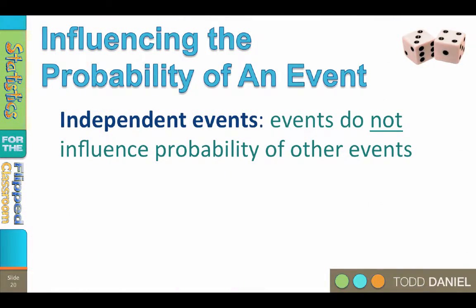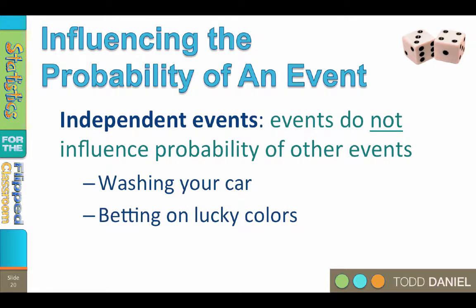The first factor that affects the probability of an event is whether the events are independent or dependent. Independent events are mutually exclusive events in which the occurrence of one event does not influence the probability of other events occurring. For instance, washing your car does not cause it to rain, nor does dancing in a circle, planning a golf foursome, or mumbling incantations to the clouds. Betting on red because it's lucky, or betting on black because you always bet on black, does not influence the outcome of the roulette wheel. These are independent events.